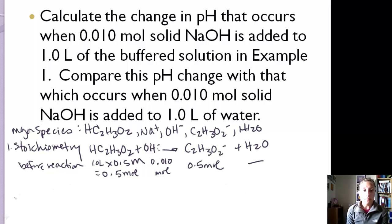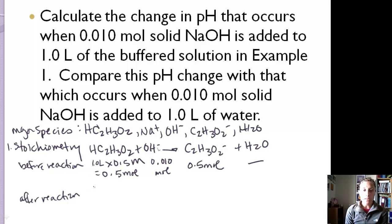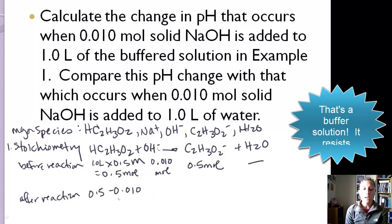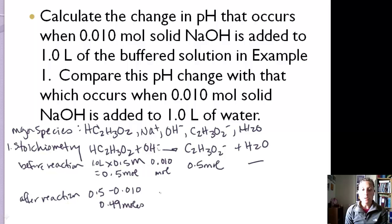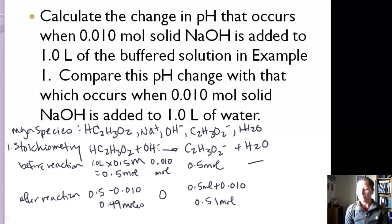After the reaction occurs, all the OH⁻ reacts until it's completely gone. So for our acid after reaction, it's 0.5 minus 0.010, giving us 0.49 moles of acid left over. No OH⁻ remains because it all reacted. For our salt ion, we've got 0.5 moles plus 0.010, giving us 0.51 moles. That's the first part — the stoichiometry.